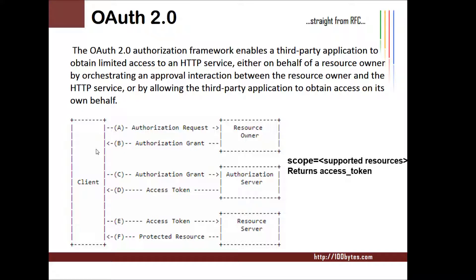This diagram explains how OAuth 2.0 actually works. There are various grant types we'll see later. First, the client sends an authorization request to the resource owner, who in our case is a Google user. The resource owner grants access, and the client presents this grant to the authorization server, which in turn issues an access token — a key for the client to use. The client then sends this access token to the resource server to access the protected resources, such as photos.